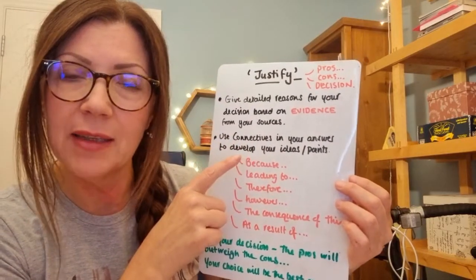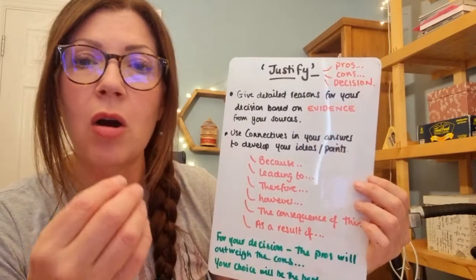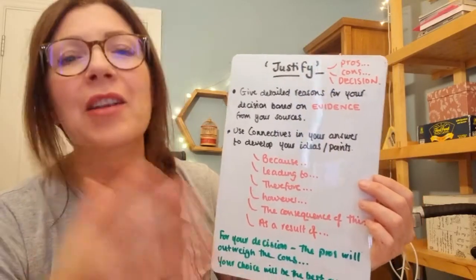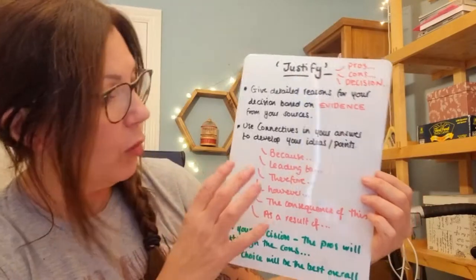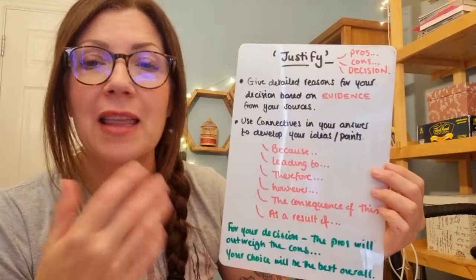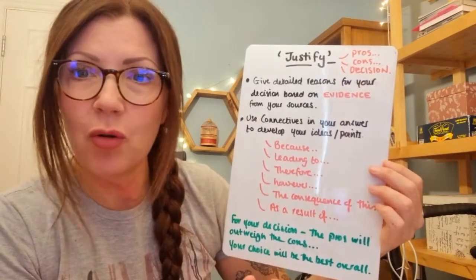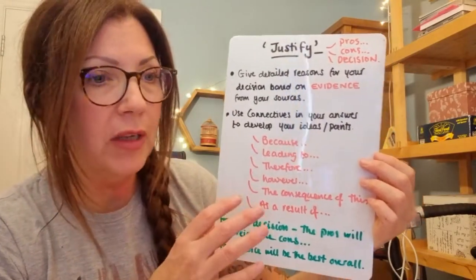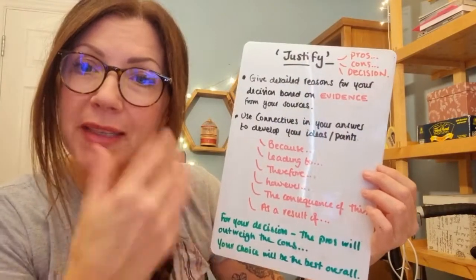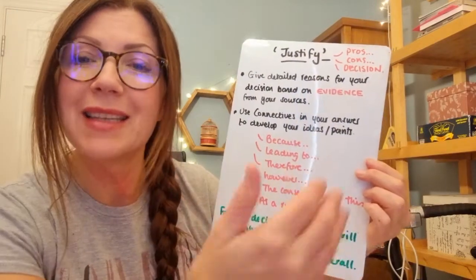We also need to look at using connectives in our answers. Because this will be a longer answer, we need to develop our statements and arguments rather than giving very short ones. We've got a range of connectives we can use: 'this is because,' 'this led to,' 'therefore,' 'this is the consequence of the one child policy on social, economic, or environmental impact,' 'however' for the cons, 'the consequences of the policy were,' or 'as a result of the policy this led to.'